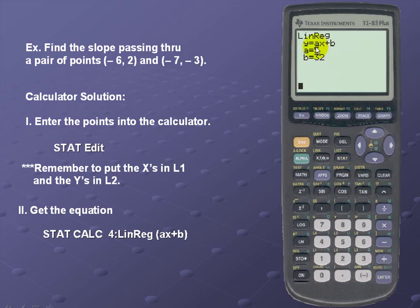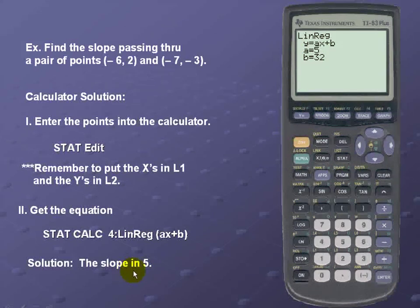Notice that the slope is the coefficient of your x value which in this case is a. So the slope for our line is 5.